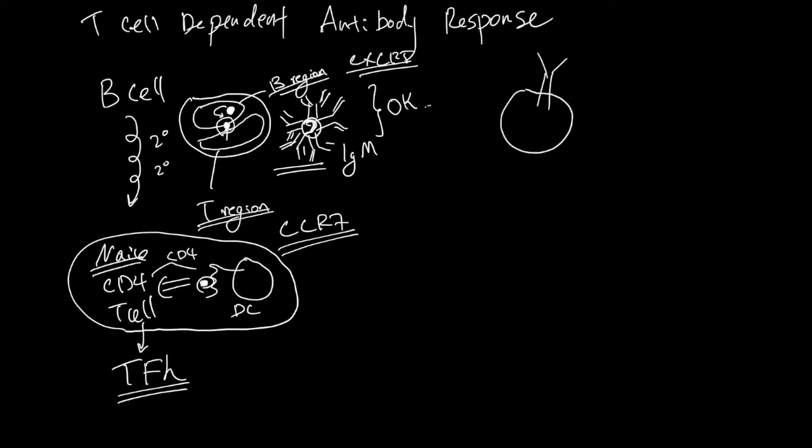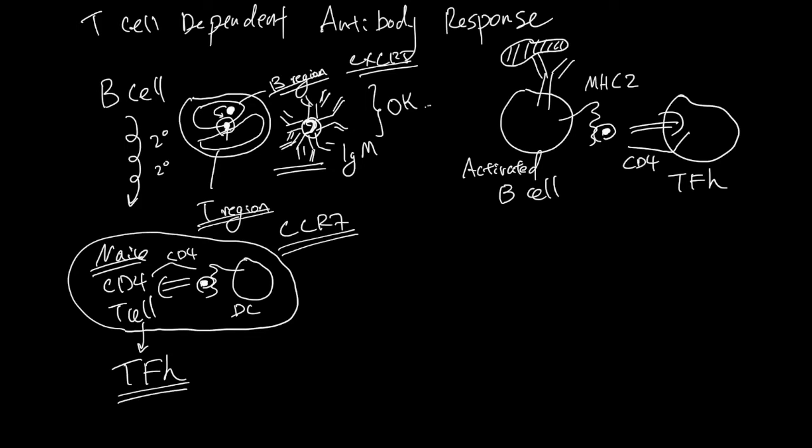This B cell can also present with MHC2 a piece of protein. Let's say it was a big protein here, but then the B cell took it in and processed it and is presenting a part of it. This activated B cell can talk to the T follicular helper cell which has T cell receptor and CD4, and if this binds then both cells will receive signals to activate even more.